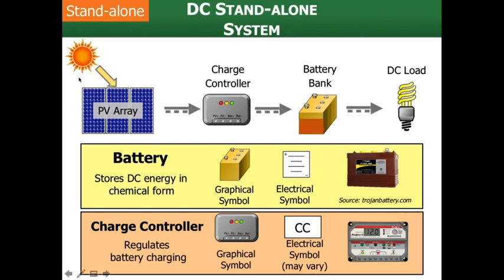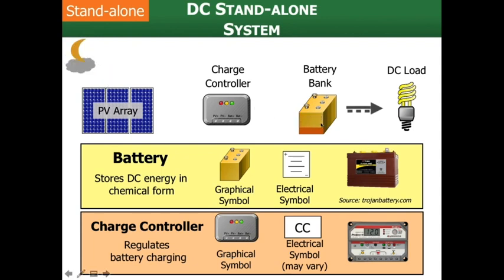So we've got sun shining on our PV array. We've got DC to the charge controller, DC to the battery, and DC to the load. What happens at night? The battery bank capacity — that orange line — is getting drawn down as we power the DC load. We'll talk about how to size systems based on the loads, and how to size the battery bank so that we have enough energy stored to keep our lights on for as long as we want.